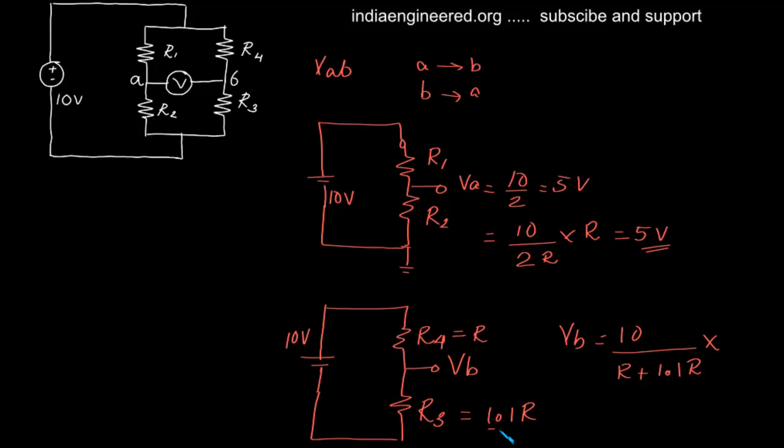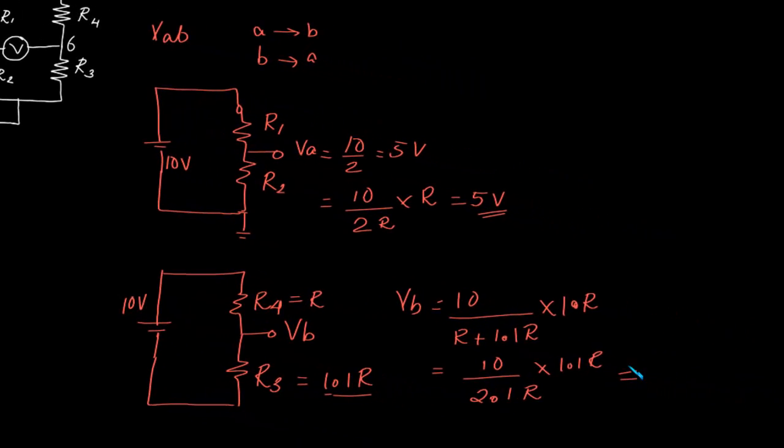That is 10/2.1R times 1.1R, which equals 5.238 volts. We have found out what is VA and what is VB.